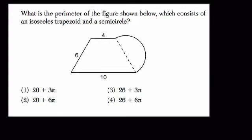Okay, we're trying to find the perimeter of this figure, which consists of an isosceles trapezoid, which means a trapezoid where these two legs are equal. It's important here. That's 6 and 6. Fix that. So we have an isosceles trapezoid and a semicircle.